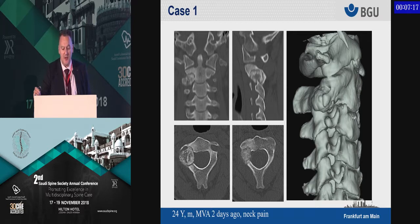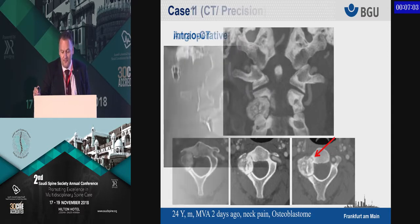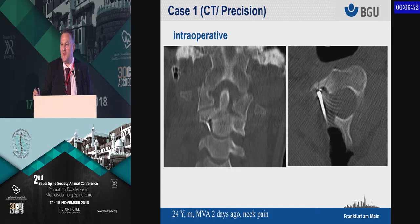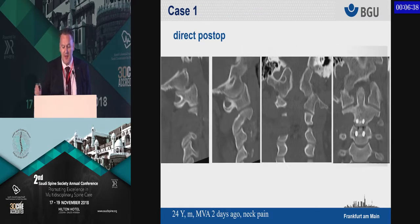The benign tumor is obviously compressing the vertebral artery on the right side, and the angio CT shows the vertebral artery is very much compressed by this osteoblastoma — it has to be operated. In these cases we use the CT scanner, because you need high precision to decompress the vertebral artery and remove the complete tumor; otherwise you will get recurrence and problems. Where we need high precision, we use the CT scanner.